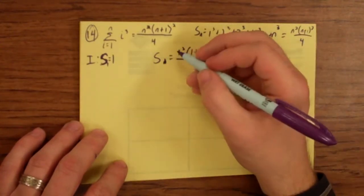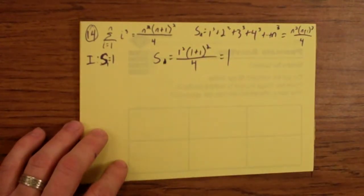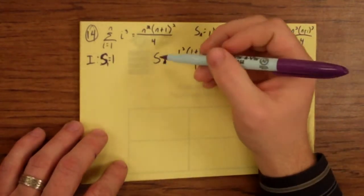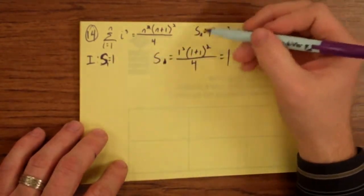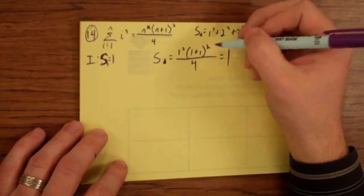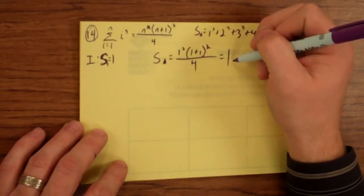So yes, it did work. Because I know that the sum of the first 1 cubed is 1, just by looking at it. And then this formula also gives me 1.